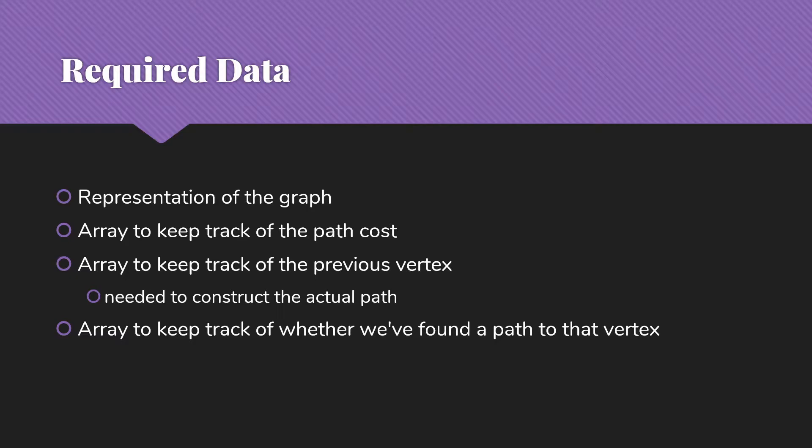And then we'll need an array to keep track of whether we've found a path to that vertex. So basically all of the things that we had before, except that we don't need a queue in this case. We'll be keeping track of the information we need to pick what is the shortest path in the array itself.